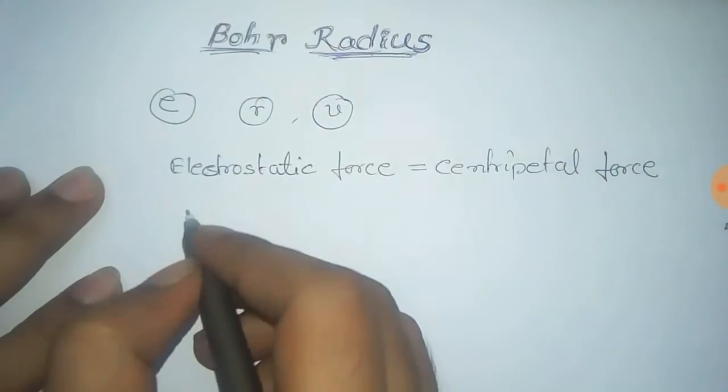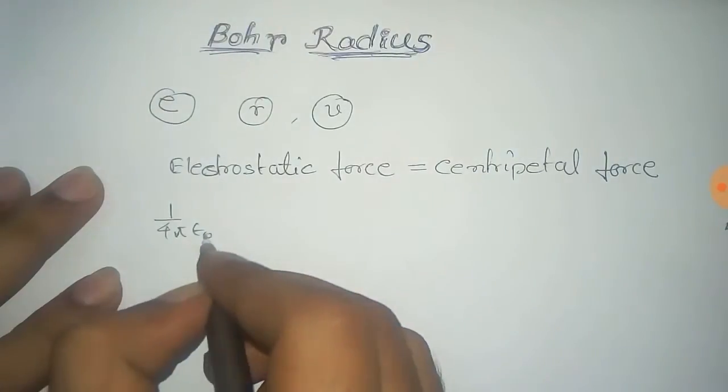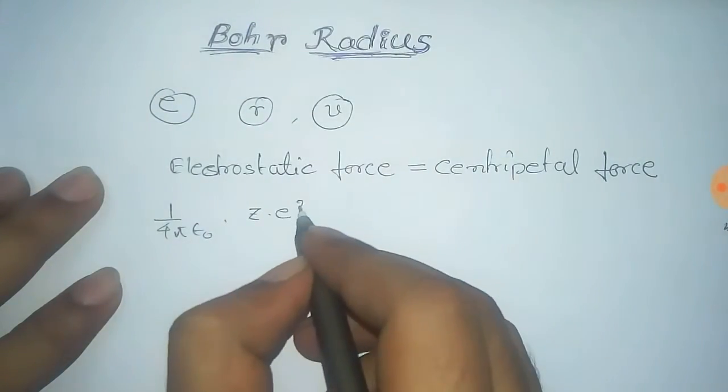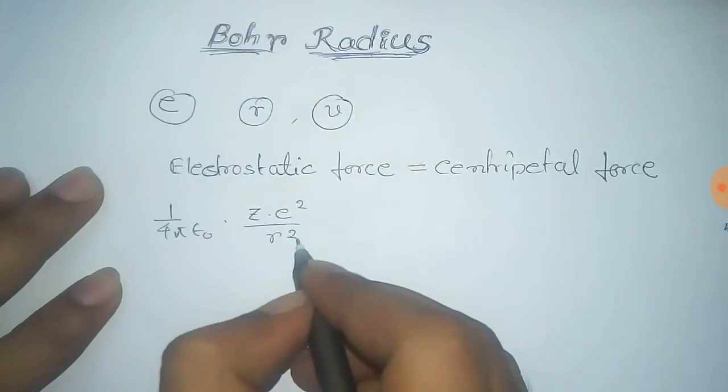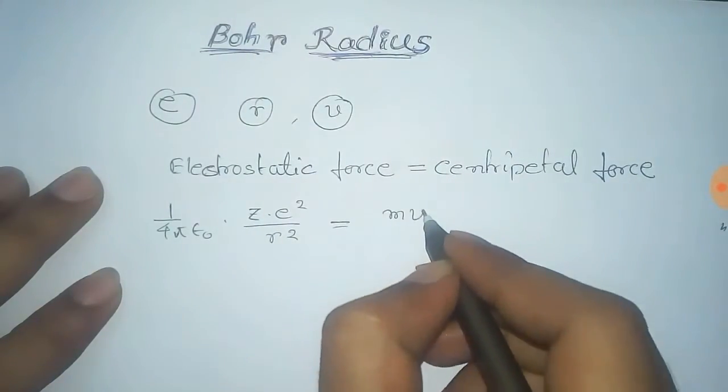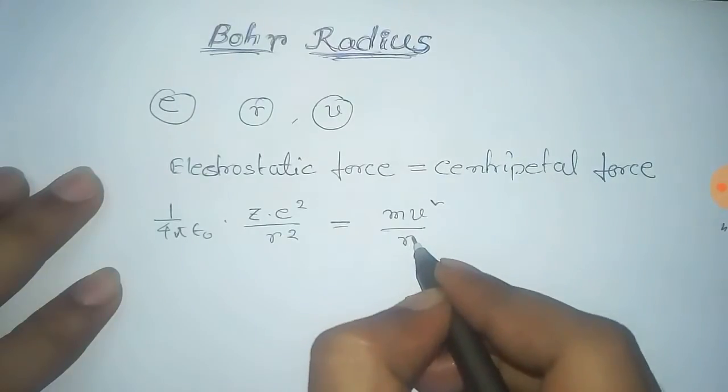The electrostatic force is given by 1/(4πε₀) times ZE² divided by R², where Z is the charge of the nucleus and R is the distance. The centripetal force is given by MV²/R.